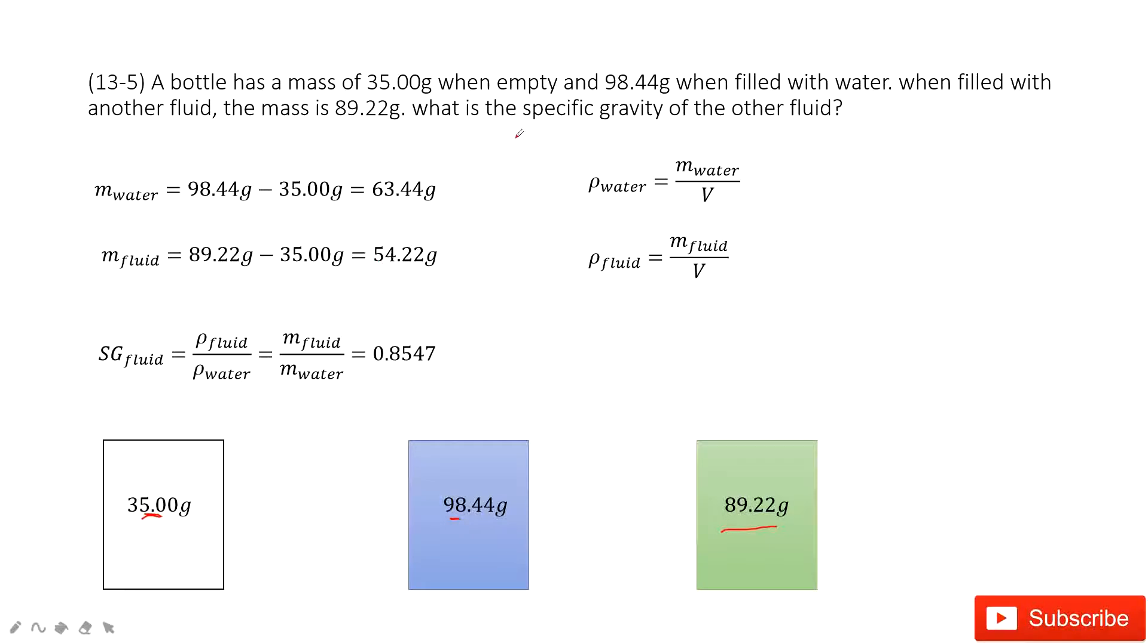Now ask you to find the specific gravity of this liquid. So what is the specific gravity? We know it's just a ratio of the density for this fluid to the density of water, right? This is the definition in our textbook.